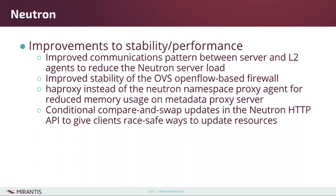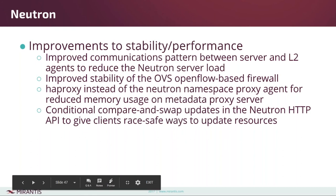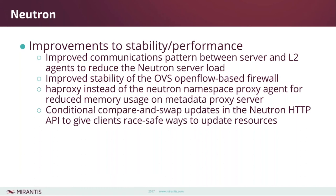Finally, there's a new compare-and-swap feature added to the Neutron API. If an external service like Heat or any other orchestration service is trying to update a Neutron resource from one state to another, it can set conditional parameters to make sure no other conflicting update happened at the same time. All of this was focused on the main Neutron repo, but there are quite a few more things in the Neutron stadium — like Firewall as a Service, VPN as a Service, and networking OVN — that all had updates too.